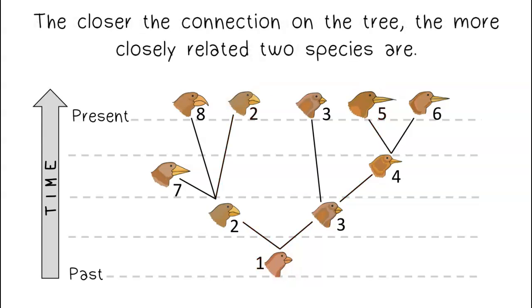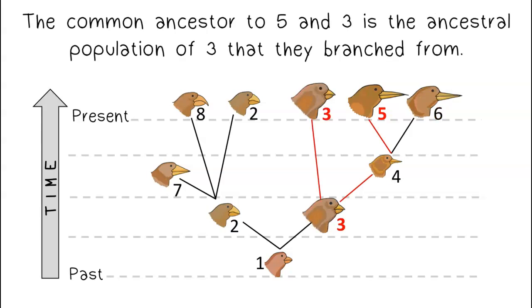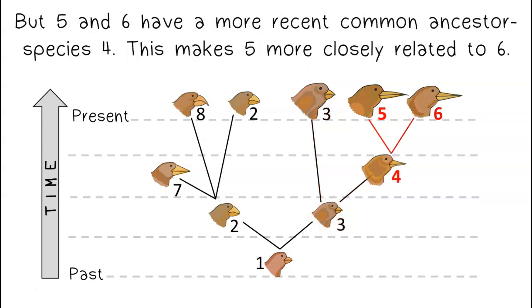The closer the connection on the tree, the more closely related two species are. Is five more closely related to three or six? The common ancestor to five and three is the ancestral population of three that they branched from. But five and six have a more recent common ancestor, species four. This makes five more closely related to six.